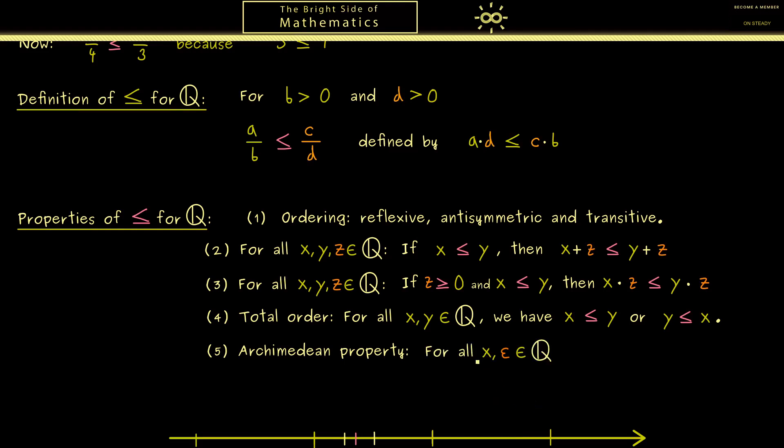Let's take positive rational numbers x and epsilon. Now the idea is that we add epsilon as often as we want, and at some point we will exceed x. Of course, for this whole sum, we can just use our short notation with the multiplication with the natural number n.